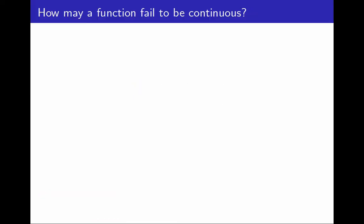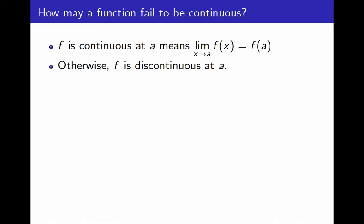How may a function fail to be continuous? Let's remember the definition. We say that a function f is continuous at a point a when the limit at a is the same as the value f(a). Otherwise, we say the function is discontinuous.